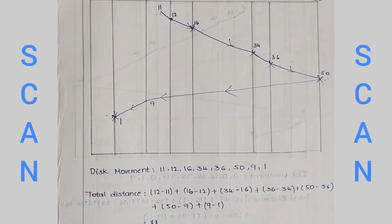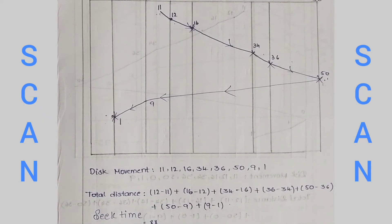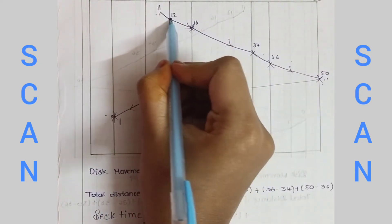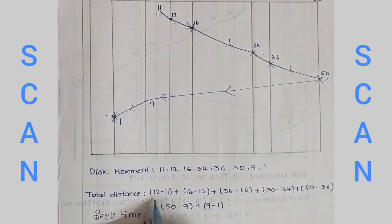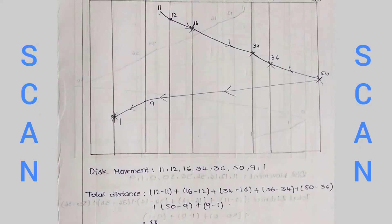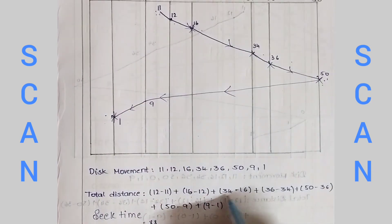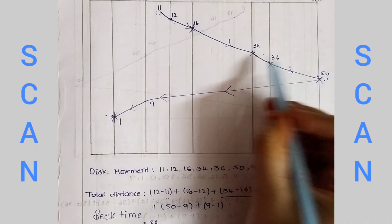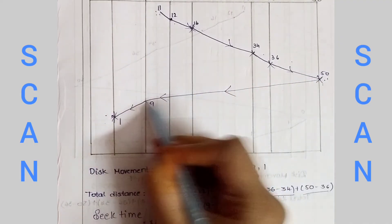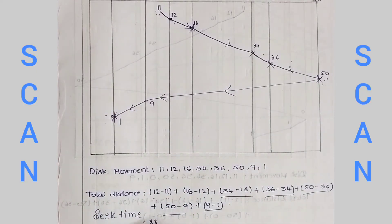So, this is disk movement. The total distance is seek time. Seek time is calculated as: 12 minus 11, plus 16 minus 12, plus 34 minus 16, plus 36 minus 34, plus 50 minus 36, plus 50 minus 9, plus 9 minus 1. Total seek time is 88.